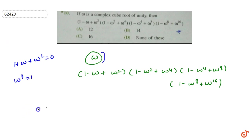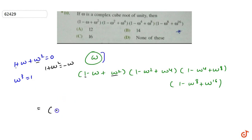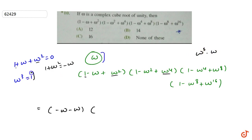Using the property 1 plus omega plus omega squared equals 0, we can write 1 plus omega squared as minus omega. So the first factor, 1 minus omega plus omega squared, becomes minus omega and minus omega. For the second factor, we have omega to the power 4, and we can write 1 minus omega squared plus omega.